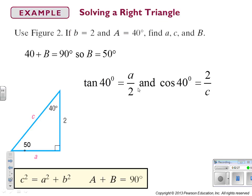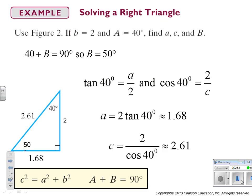Then, in this case, we multiply both sides by 2, and we get 1.68 approximately. In this case, we multiply both sides by C and then divide by cosine of 40 to get 2 over cosine of 40, which is approximately equal to 2.61. And now we have all of our angles and all of our sides. This triangle is solved.